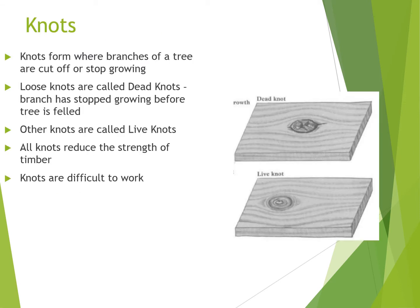Knots form where branches of a tree are cut off or stop growing. Loose knots are called dead knots — you'd often see those in pallets and cheaper pieces of timber. A dead knot is where a branch has stopped growing before the tree is felled. Other knots are called live knots, where the branch is on the tree when it is cut down. All knots reduce the strength of timber and are difficult to work with. The less knots, the more value is placed on that piece of timber.